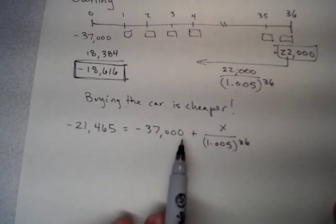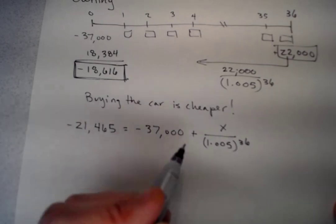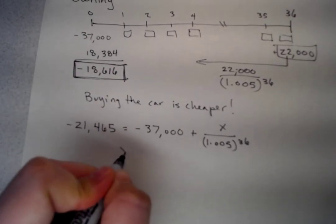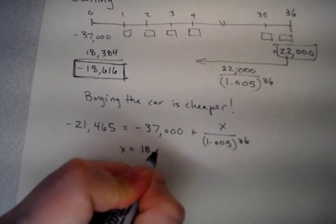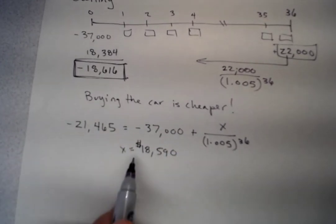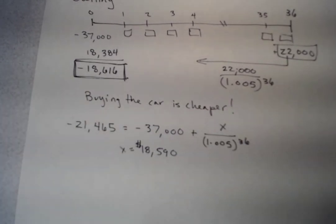We want the break-even price. This is the present value of the loan, and this is how much leasing would cost. We solve for that. I'm going to let you do the algebra, and you end up with X equals $18,590. That is the price at which if we sold the car in month 36, we would be indifferent between buying and leasing.